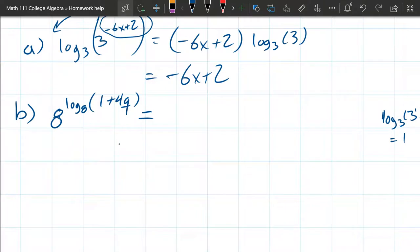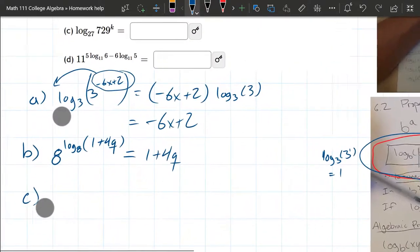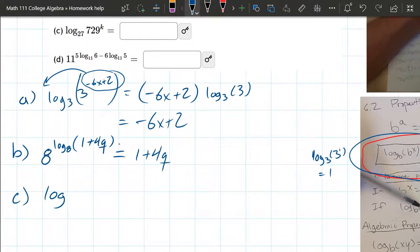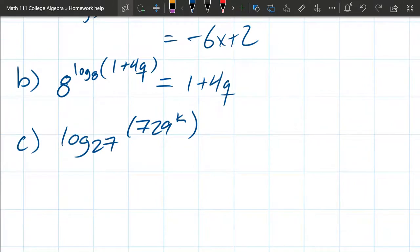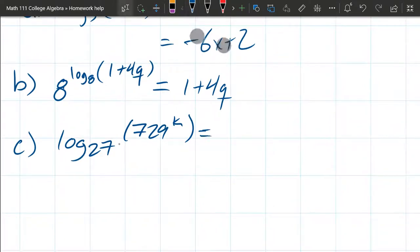So this all reduces down: log base 8 cancels the 8 exponential and that's just 1 + 4q. All right, part c: log₂₇(729^k). So let's go ahead and take the exponent out and it comes out as a coefficient.